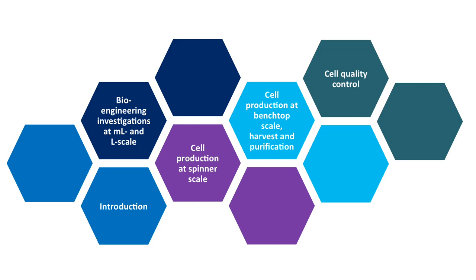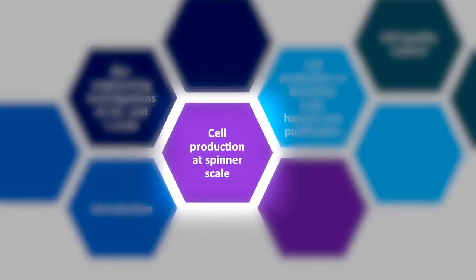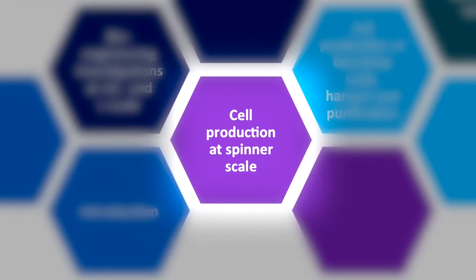This video is part of the e-learning series expansion of mesenchymal stem cells in stirred single-use bioreactors, specifically cells derived from human adipose tissue, generally referred to as MSCs. In this section, we focus on the microcarrier-based cultivation in spinner flasks.